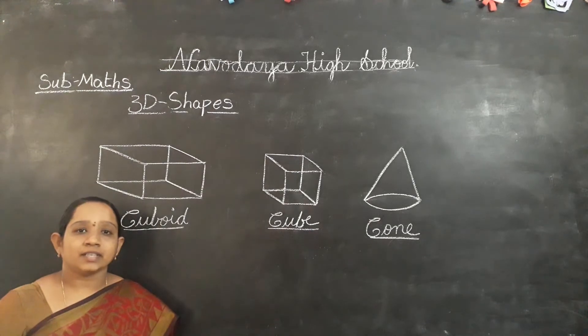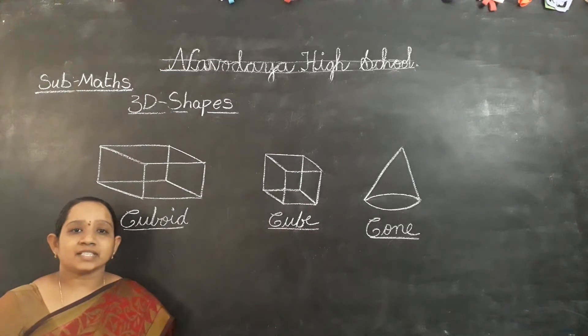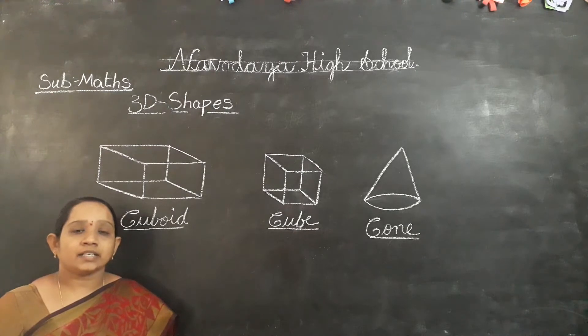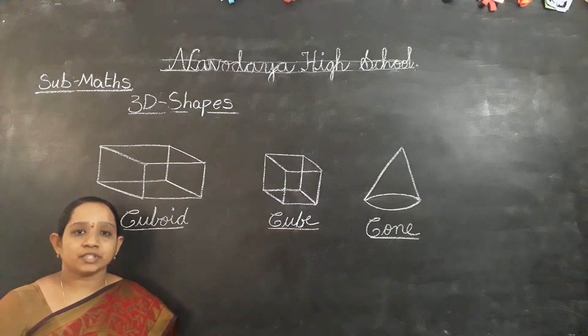Good morning children. In the previous class we have learnt about 2D shapes, 3D shapes, and sides and corners of 2D shapes.